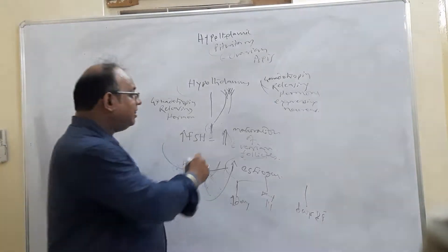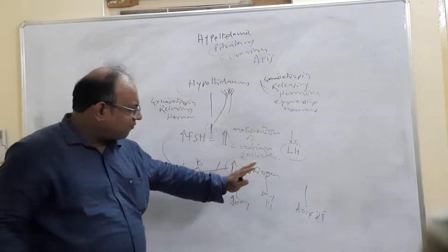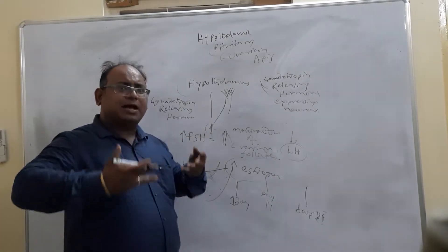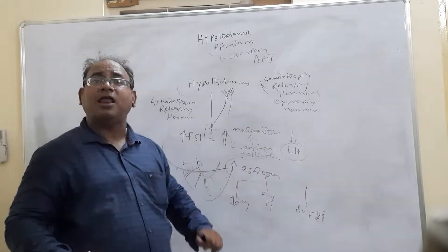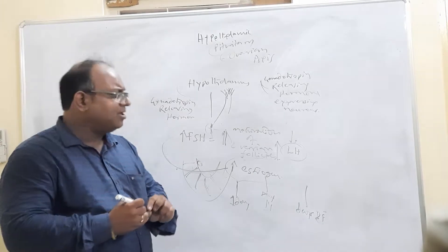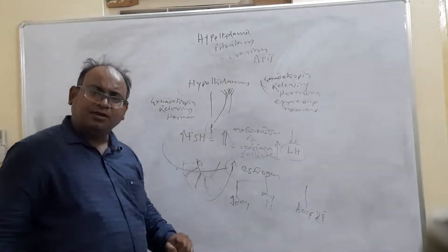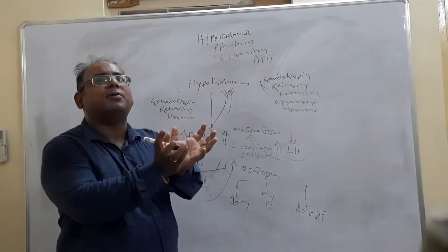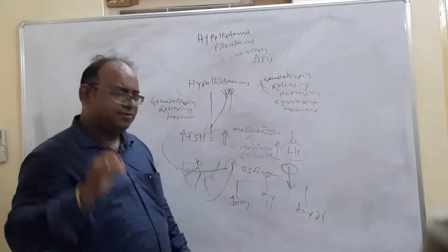This positive feedback causes the anterior pituitary to immediately release another hormone called luteinizing hormone. On day 14, the estrogen level is maximum and signals the anterior pituitary, which releases luteinizing hormone — causing a sharp rise. This luteinizing hormone acts on the matured ovarian follicles, causing them to rupture so that the ovum comes out. This is called ovulation.